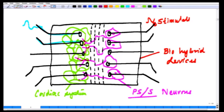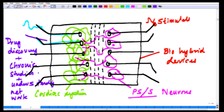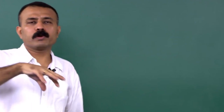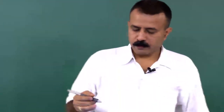Bio-hybrid devices are where electronic components are integrated with biological components, leading to a marriage of these two diverse systems in order to extract meaningful information. This could be used for drug discovery, chronic studies, long-term effects of drugs, and understanding networks — which is a very challenging task in real life. You can add component by component into these circuits.